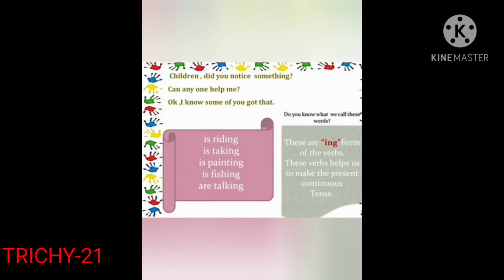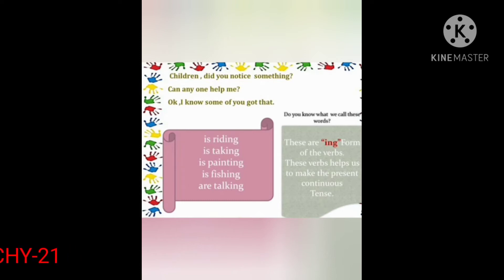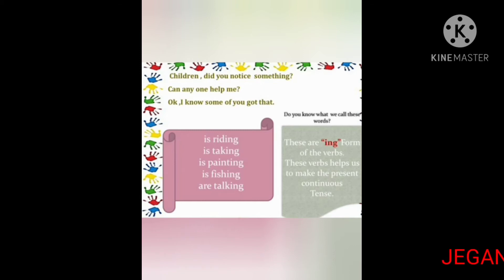Children, did you notice something? Can anyone help me? Is riding, is taking, is painting, is fishing, are talking — these are the -ing forms of the verb. These verbs help us to make the present continuous tense. Do you know what we call these words? These are the -ing forms of the verb.